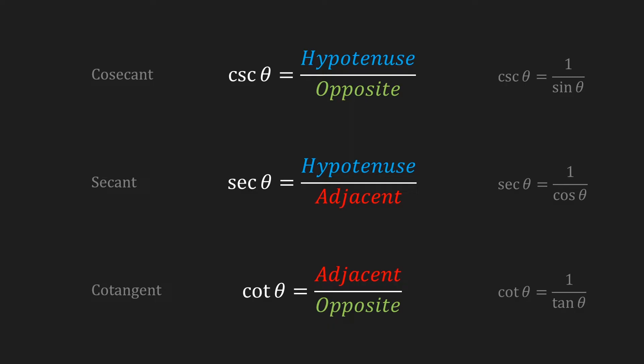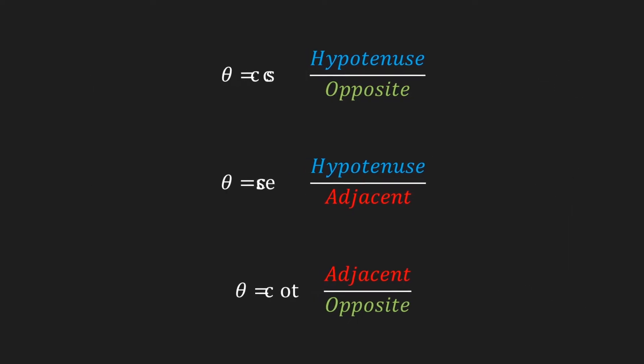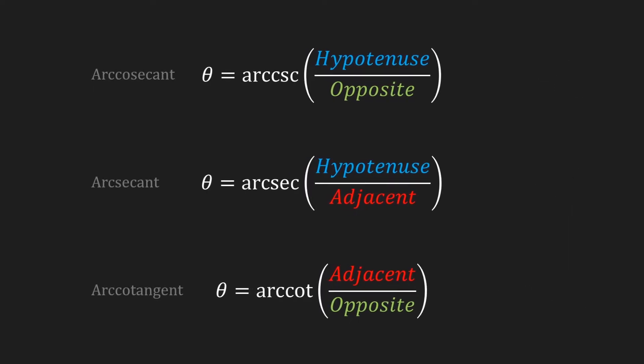We won't have an in-depth look at these three functions, but they also have an inverse: the arc cosecant, the arc secant, and the arc cotangent. Just as the sine, cosine, and tangent, the arc cosecant of the cosecant of an angle is equal to the angle itself, and of course the same is true for the secant and cotangent.